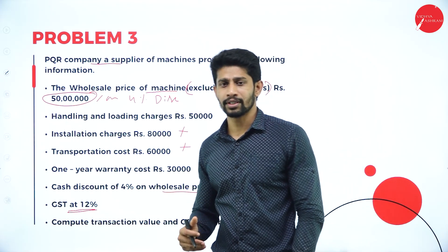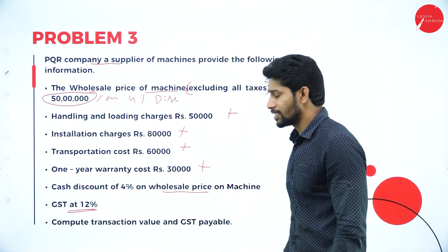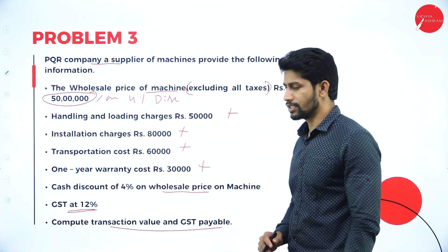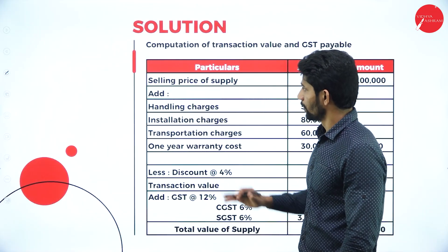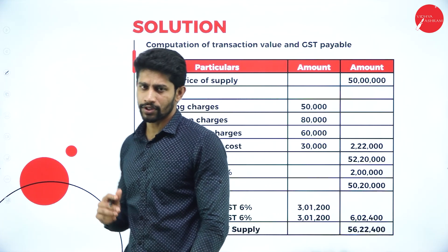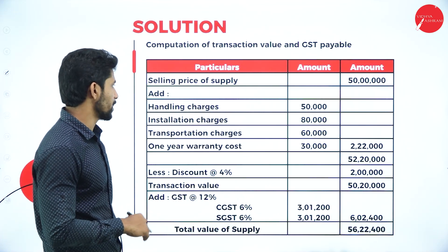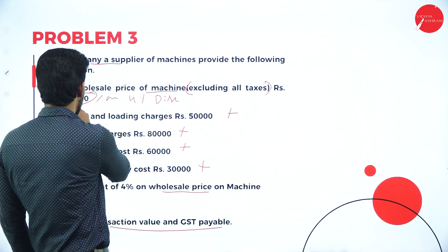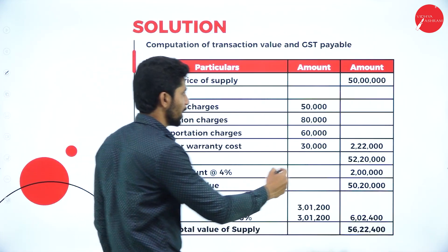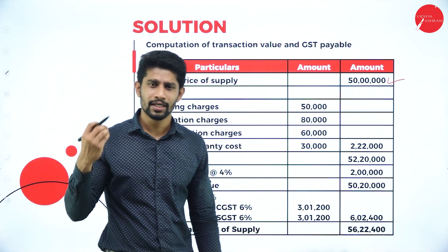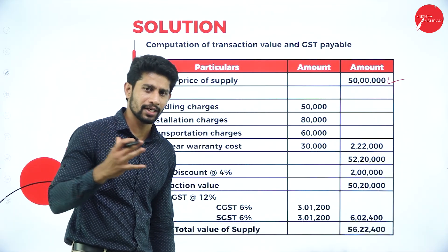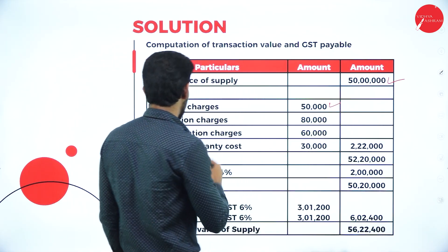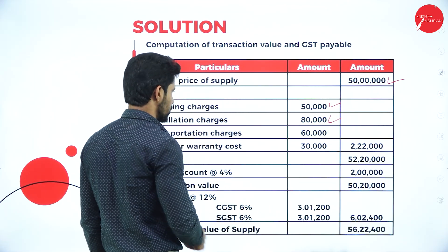You are supposed to compute the transaction value and the GST payable by PQR Company. For the computation, first take the wholesale price or selling price of supply, which is Rs. 50 lakhs. Write Rs. 50 lakhs in the outer column, then add all expenditures relevant to the supply: handling charges Rs. 50,000, installation charges Rs. 80,000, transportation charges Rs. 60,000, and one year warranty cost Rs. 30,000.